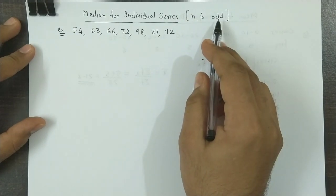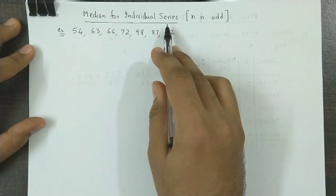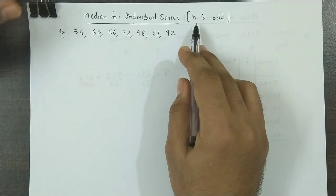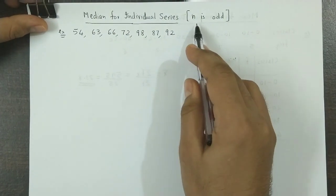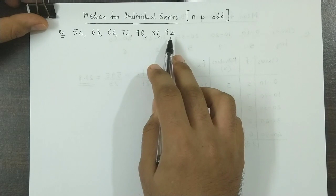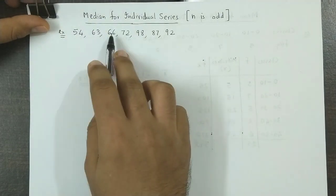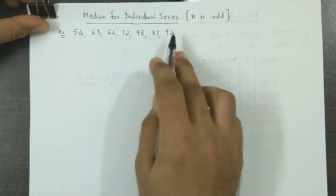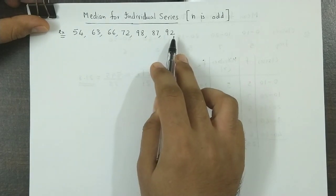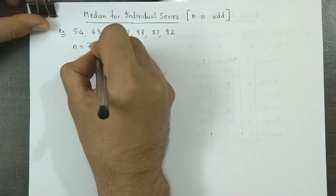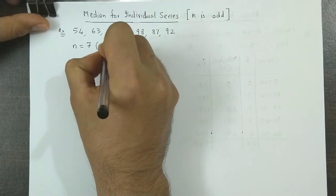So in this video we'll find out the median for the individual data series when the number of observations is odd. Now let us understand this by an example. Suppose we have a set of data, let us count how many observations do we have here: 1, 2, 3, 4, 5, 6, 7. So there are 7 observations, that is the number of observations is 7 which is an odd value.